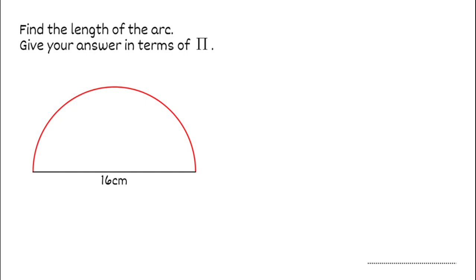For this first question we've got to figure out the arc length, giving our answer in terms of pi. We can see we've got a semicircle. Going back to our formula for the circumference of a circle, to find the circumference we simply do pi multiplied by the diameter. But that would give us the whole circumference, and in this question we've got a semicircle — we only want half of that circumference. So to find the length of the arc of the semicircle, we do pi times the diameter and simply divide that by 2.